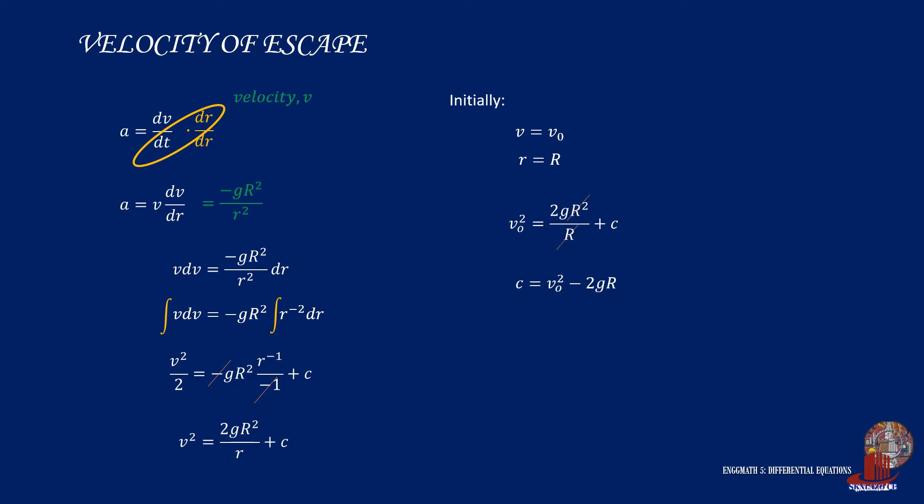the constant c is determined as v0 squared minus 2g times capital R. So the particular working solution for velocity of escape is v squared is equal to 2g times capital R squared all over r plus v0 squared minus 2g times capital R.